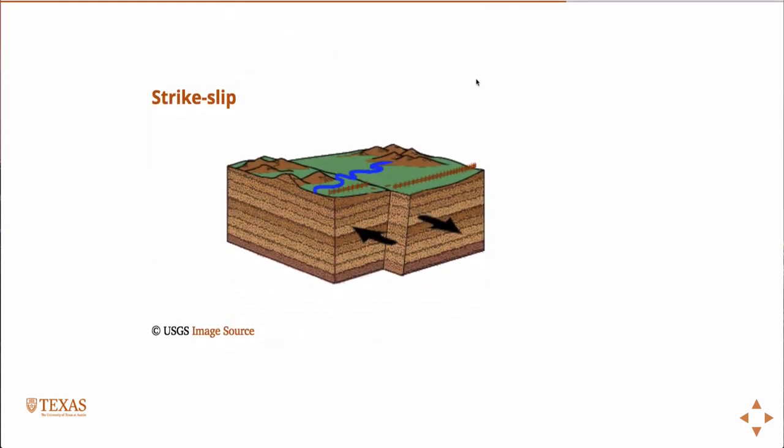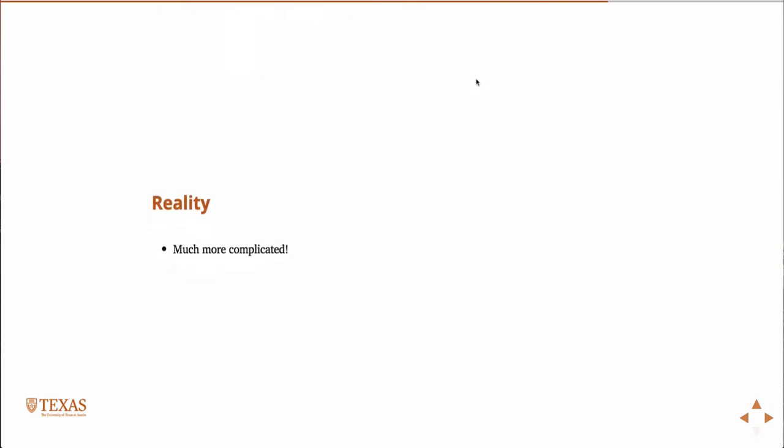Obviously, strike-slip fault is the type of motion that would be accommodated in a transform plate boundary, where the two faults are sliding past one. And again, in reality, nothing is that simple. It's much more complicated. You'll almost always have some combination of both normal and strike-slip or reverse and strike-slip.